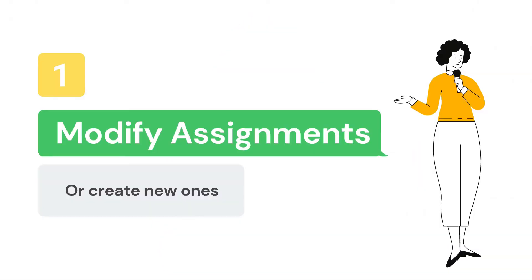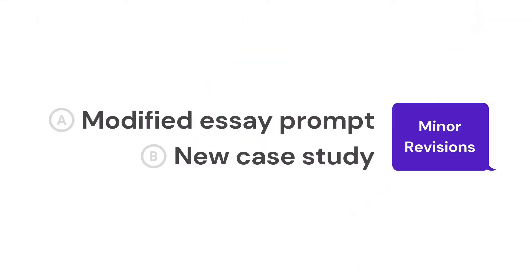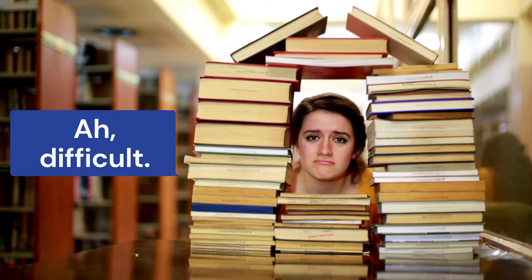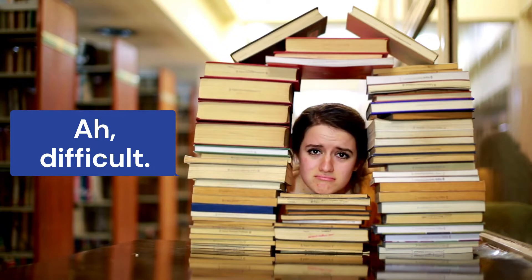First, modify assignments or create new ones. This doesn't need anything fancy — just a little tweak would do, like slightly changing essay prompts, using a separate case study, or requiring students to address specific perspectives in essays. That way, finding old essays to copy makes in-class plagiarism particularly difficult.